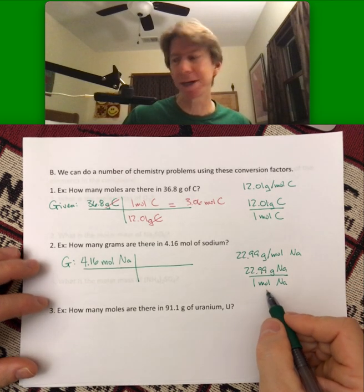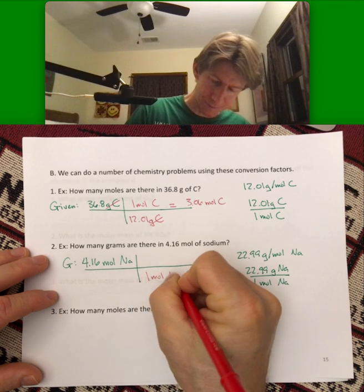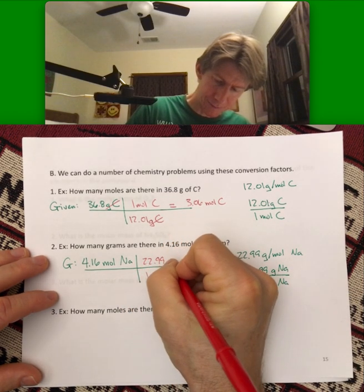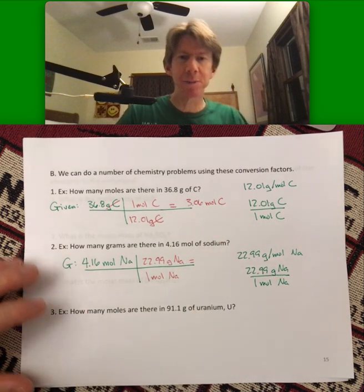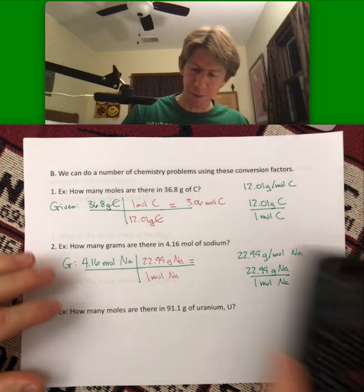And, that expands, just like the carbon, into 22.99 grams of sodium per one mole of sodium. And, this time, we've already got our moles on the bottom. And we can put our grams on the top. And, it's all over, but the math.